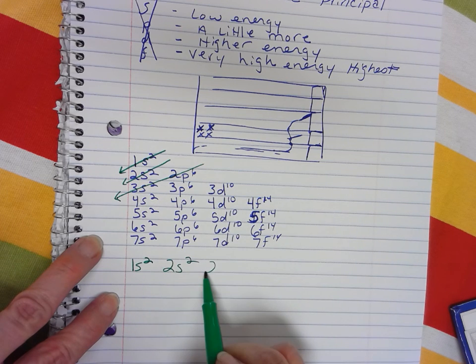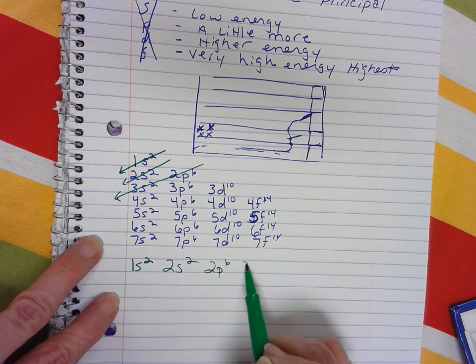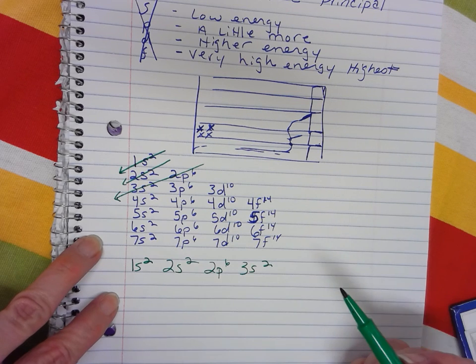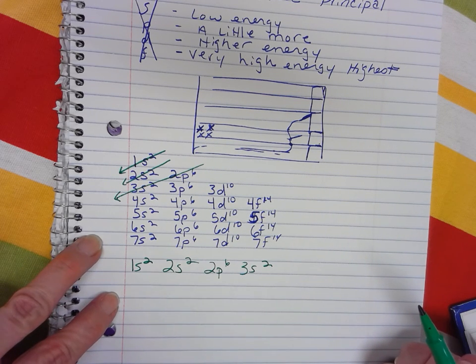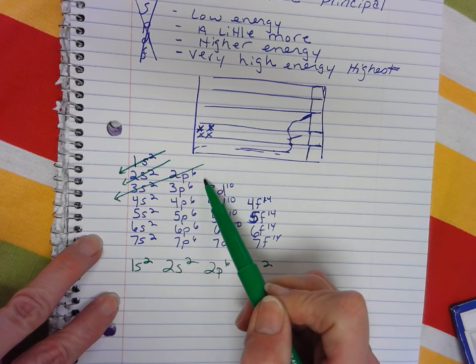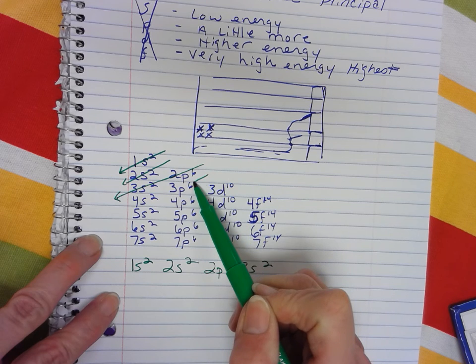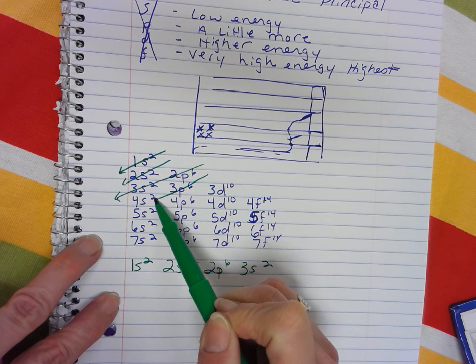So you write 2p6, and 3s2. Up to this point, everything is normal, what you'd expect it to be. But here is where we start to see a little bit of a difference. The next thing that fills is 3p6, and then 4s2.